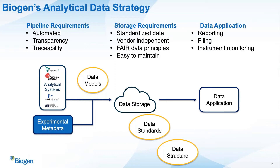Biogen's analytical data strategy — we want to create an automated pipeline that takes the data we're generating from our analytical systems, such as our chromatography systems like Empower, cell counters like the Beckman-Coulter Vi-CELL, plate readers, etc., combine those outputs with the experimental metadata, store that information in a cloud-based environment where all information has been standardized with data ontologies and data models, and undergoes restructuring so all outputs come out in a standardized data structure like an ADF.